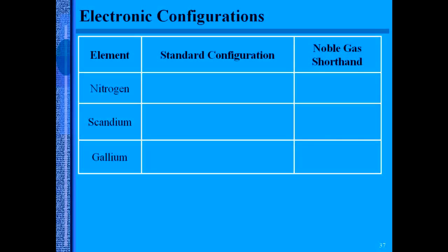Here are some electron configurations: nitrogen, scandium, gallium. What I would like you to do is go through and do the standard configuration in your notebook. And then when we go over the periodic table in class, we will review them together.